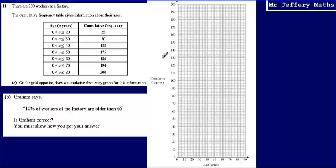This is question 11 from a series of videos taking a look at the Edexcel practice papers. Here we're told that there are 200 workers at a factory and we're given a cumulative frequency table, which is here.